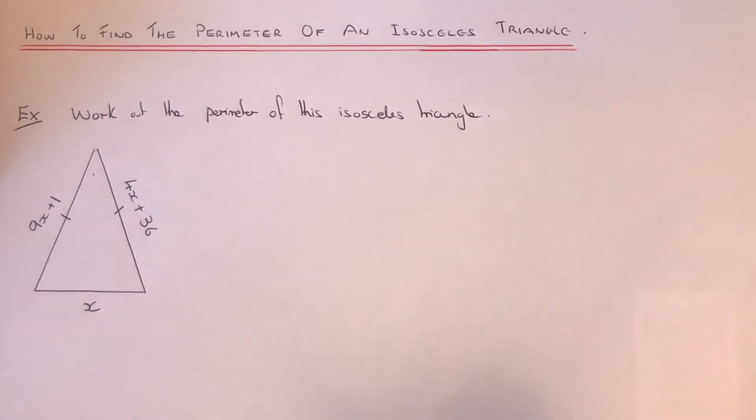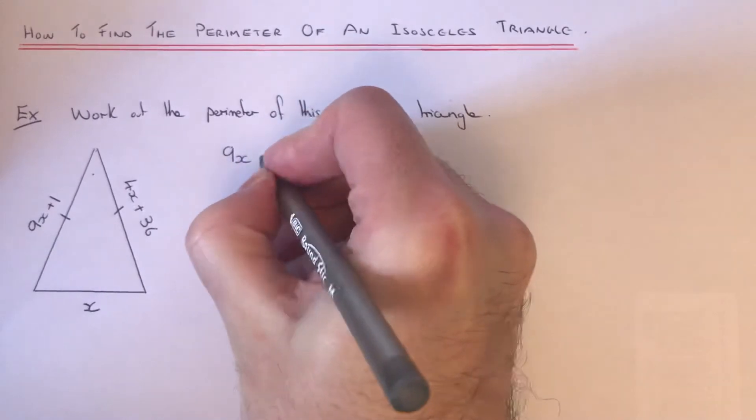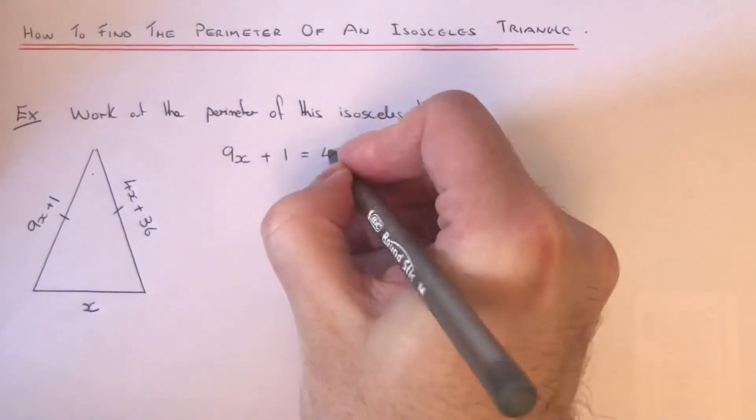Okay, so the special thing about an isosceles triangle is that these two sides here are equal. So what we can do is make the two sides equal to each other.